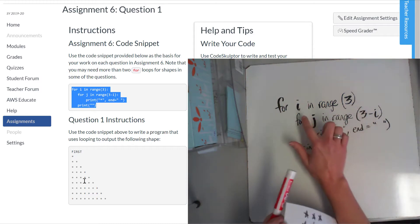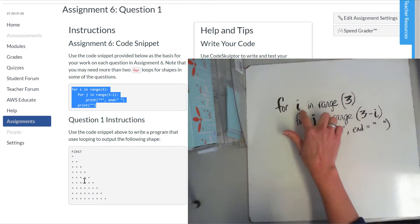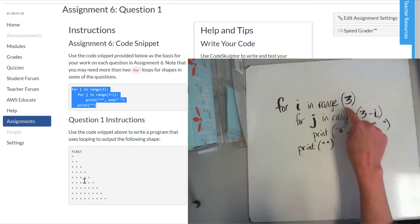On this first line we've got the letter i which is a variable that is going to count and take on a different value for every line that it loops through. So i in range three, this three tells me how many lines it's going to loop through. So do this loop three times.